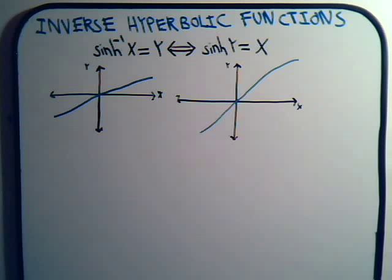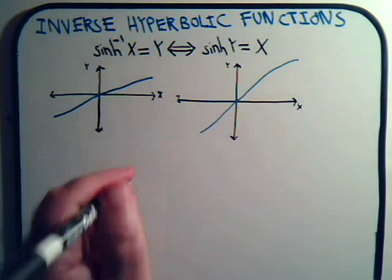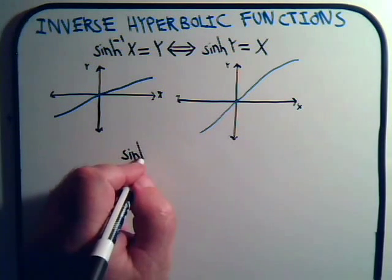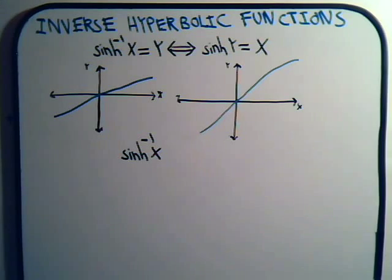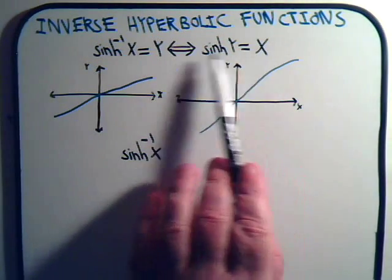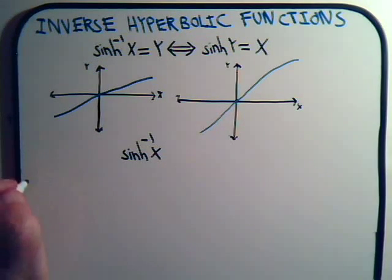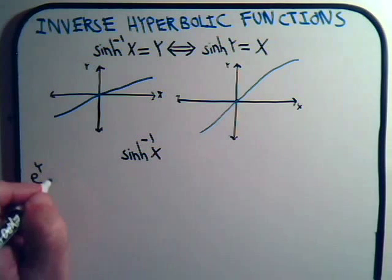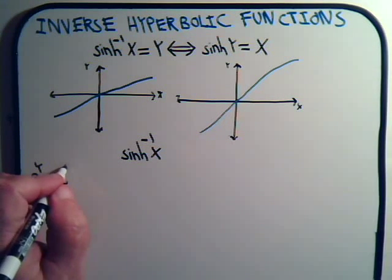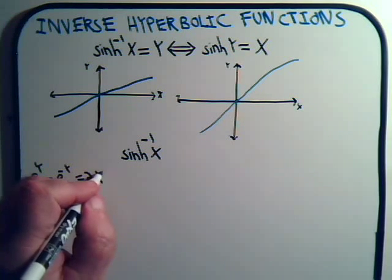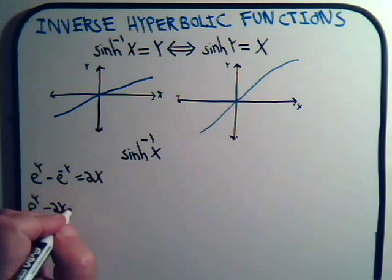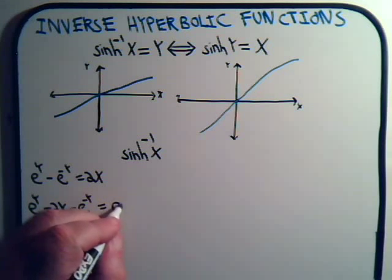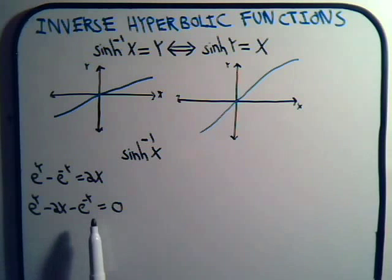What we're going to do in this video is find a logarithmic expression for the inverse hyperbolic sine of x. We start by working with the expression sinh(y) = x, which gives us e to the y minus e to the minus y equals 2x. Bringing 2x over, we have e to the y minus 2x minus e to the minus y equals 0. Now let's get rid of this negative exponent.